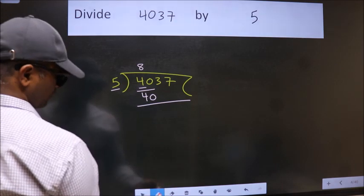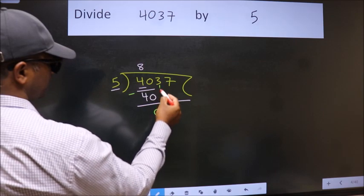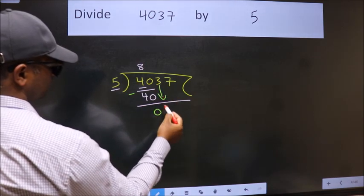Now, we should subtract. We get 0. After this, bring down the beside number. So, 3 down.